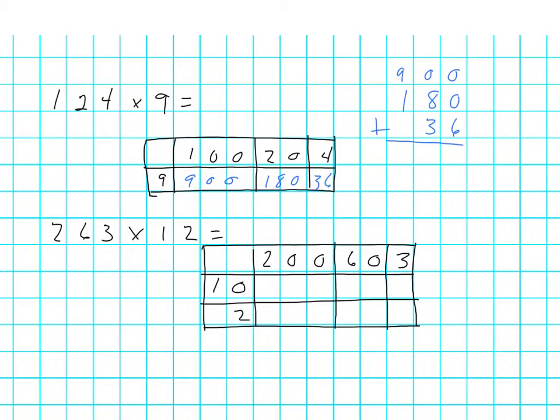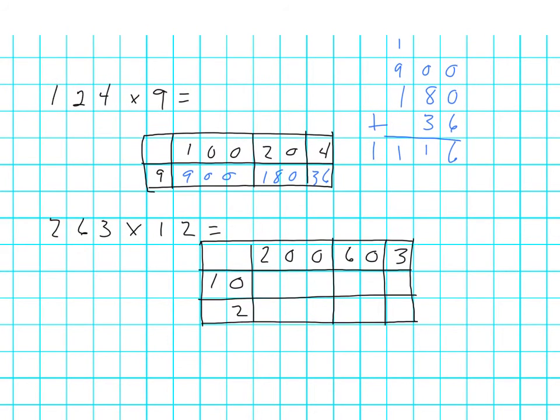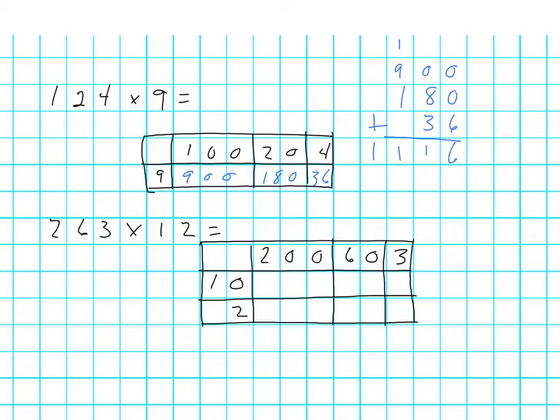So now I'm adding. 6 and 0 is 6. 30 and 80 is 110. Add 100. 100 plus 900 is 1,000 plus another 100 is 1,100. So my answer is 1,116.